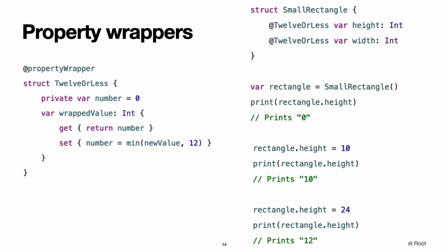Property wrappers: a property wrapper adds a layer of separation between code that manages how a property is stored and the code that defines a property. For example, if you have properties that provide thread safety checks or store their underlying value in a database, you have to write that code on every property. When you use a property wrapper, you write the management code once when you define the wrapper, and then reuse that management code by applying it to multiple properties.